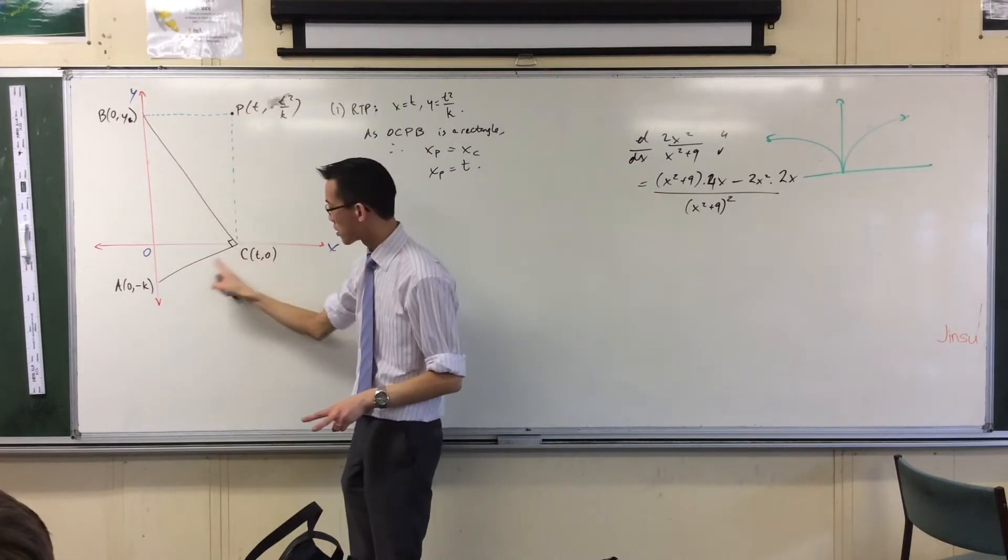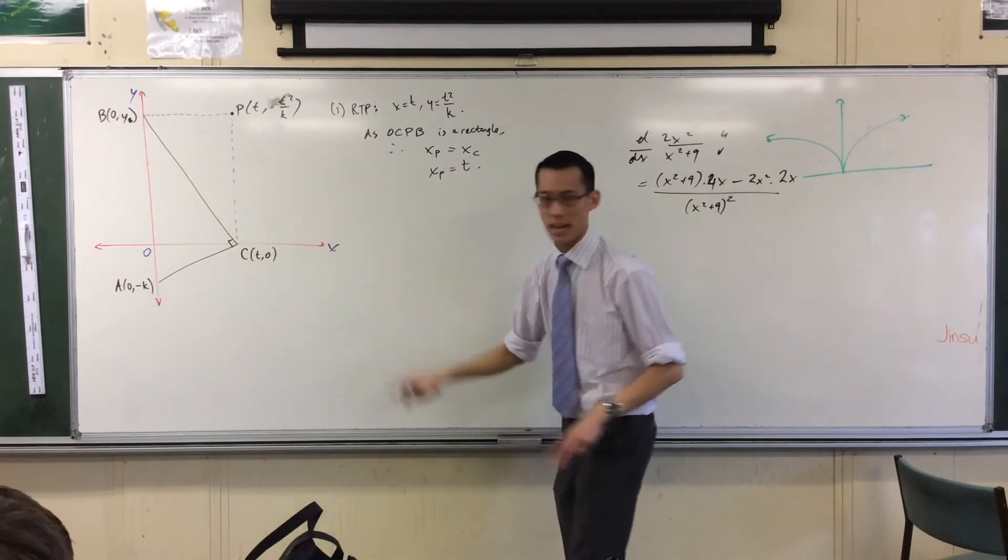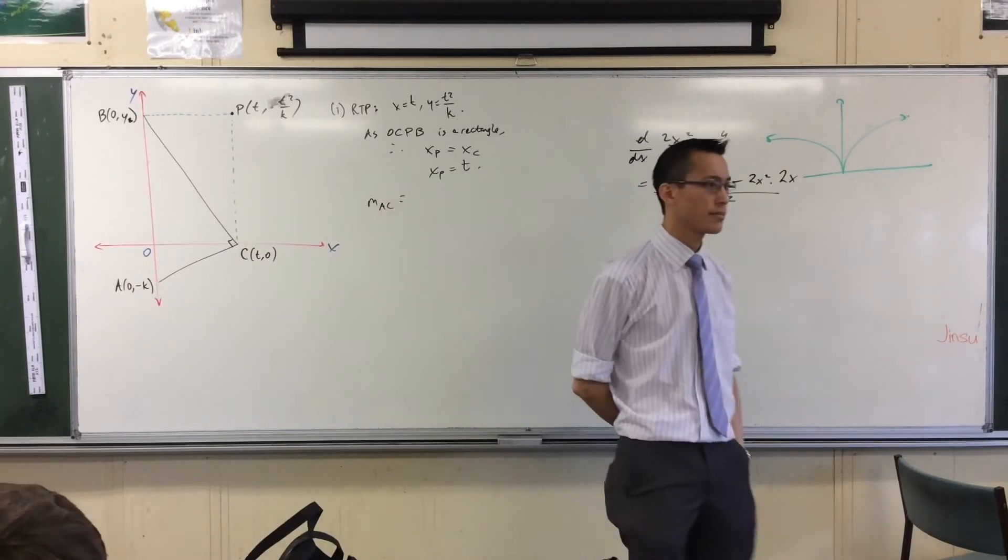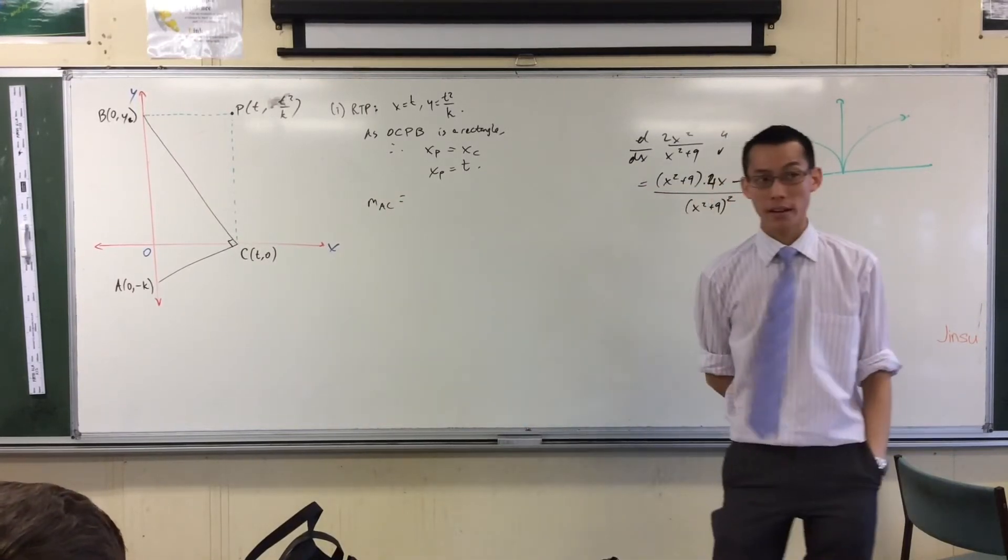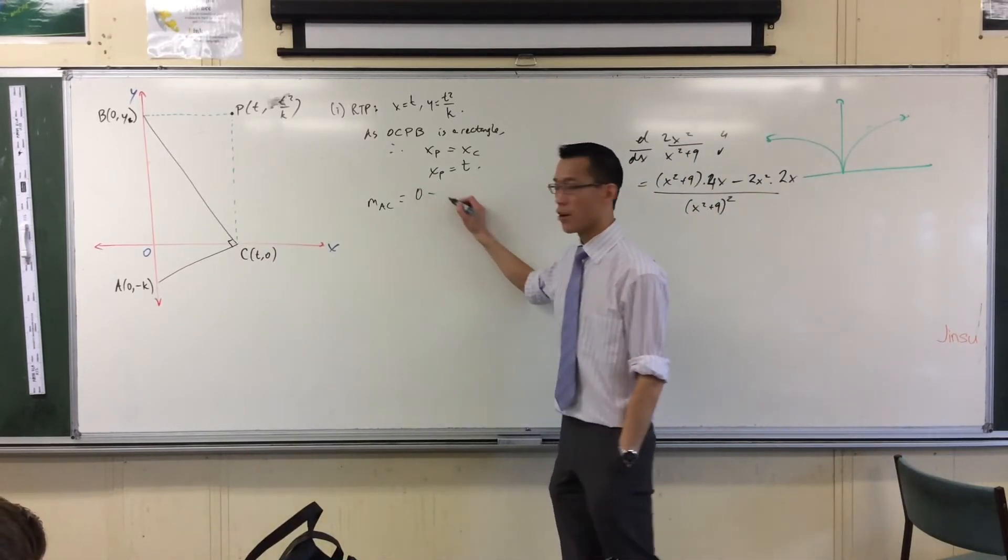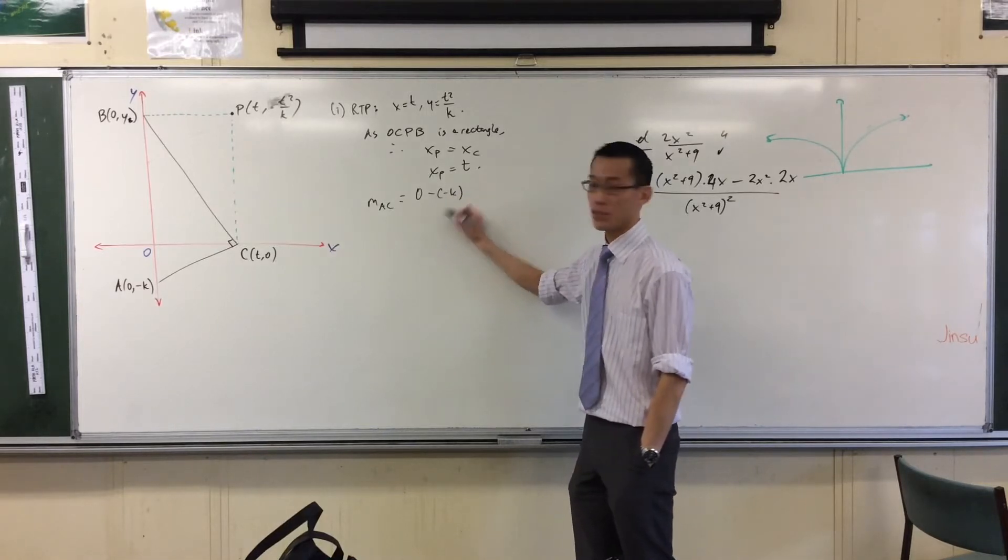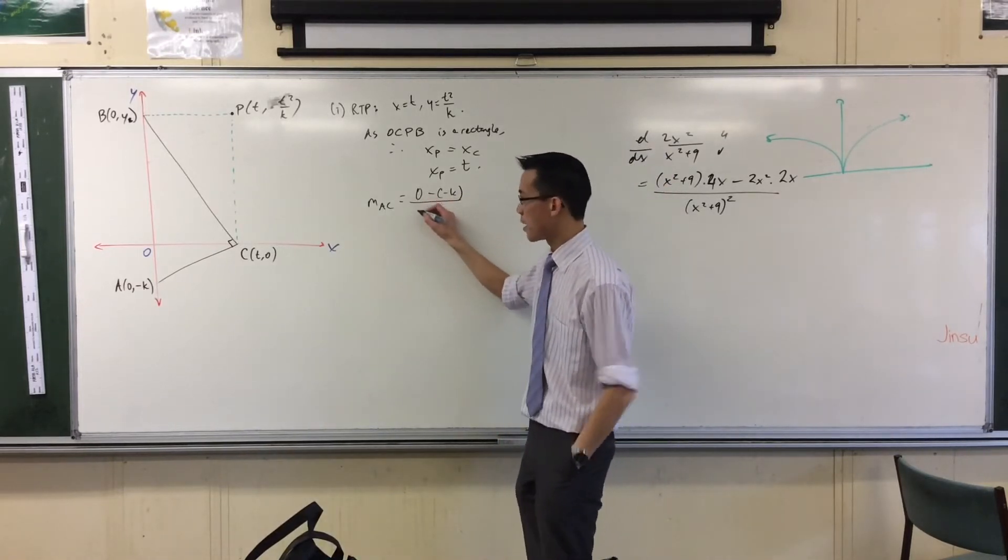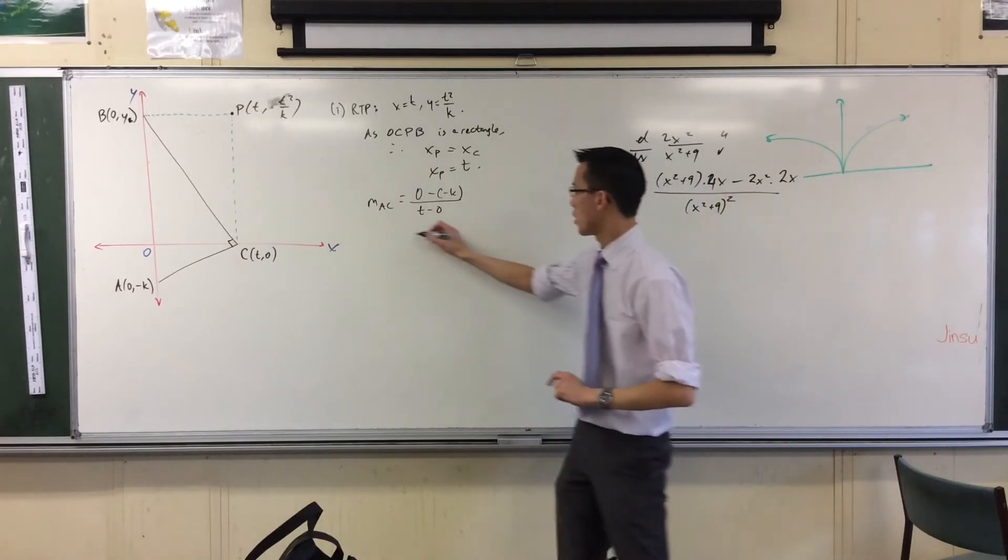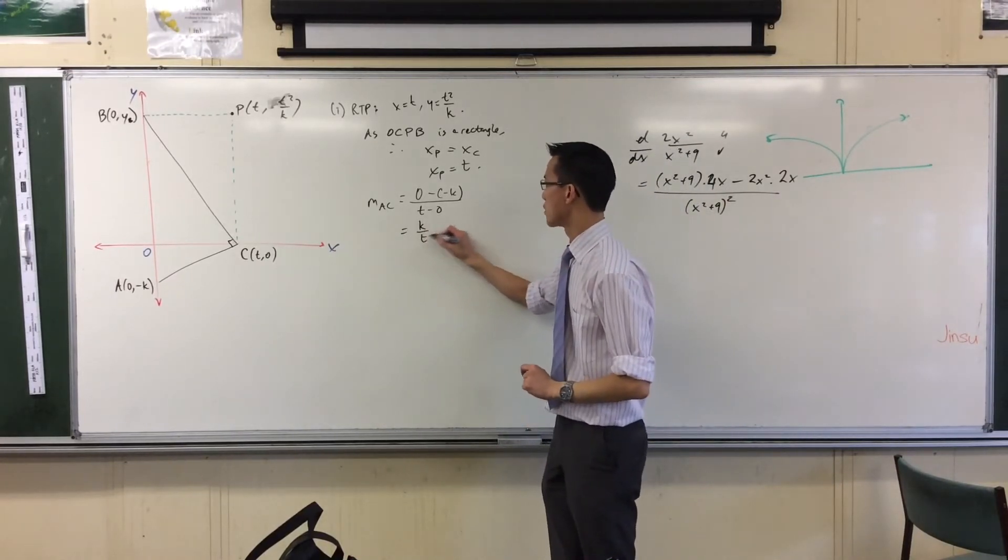To get this line, I've got to start with this one. What's the gradient of AC? It's rise over run. So, it's 0 take away negative K, do you agree with that? Divided by T take away 0. There's the run. So, I've got K over T.